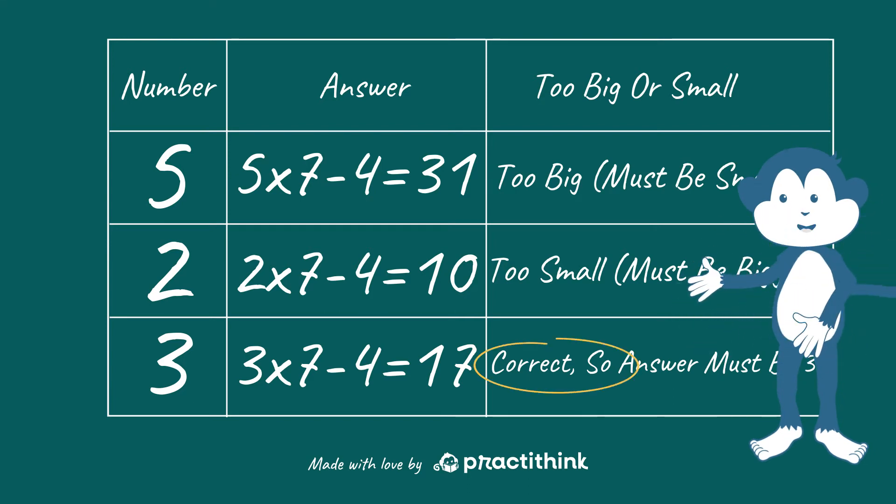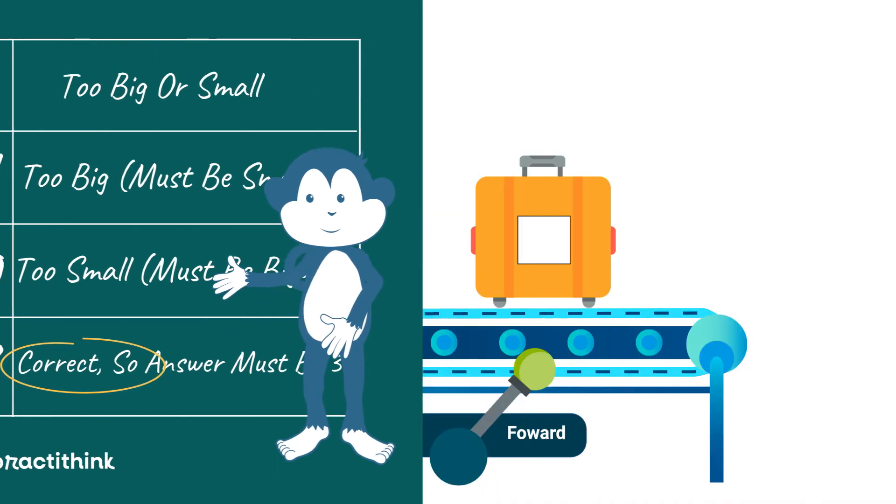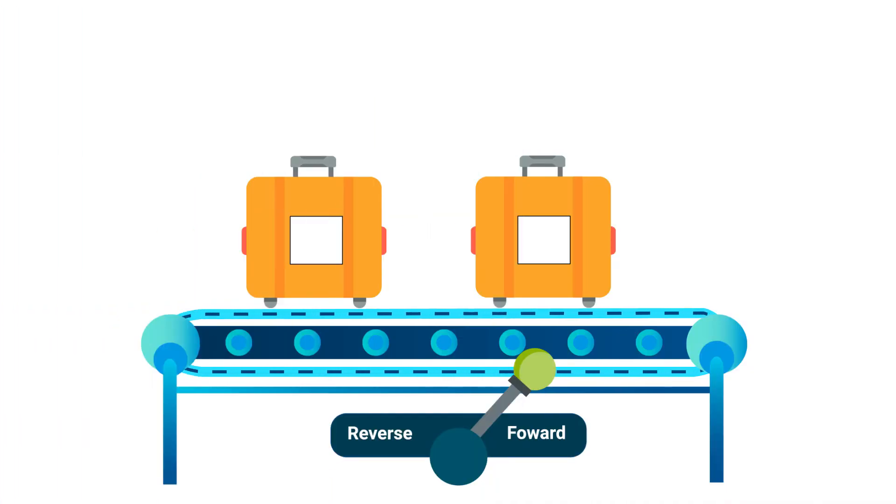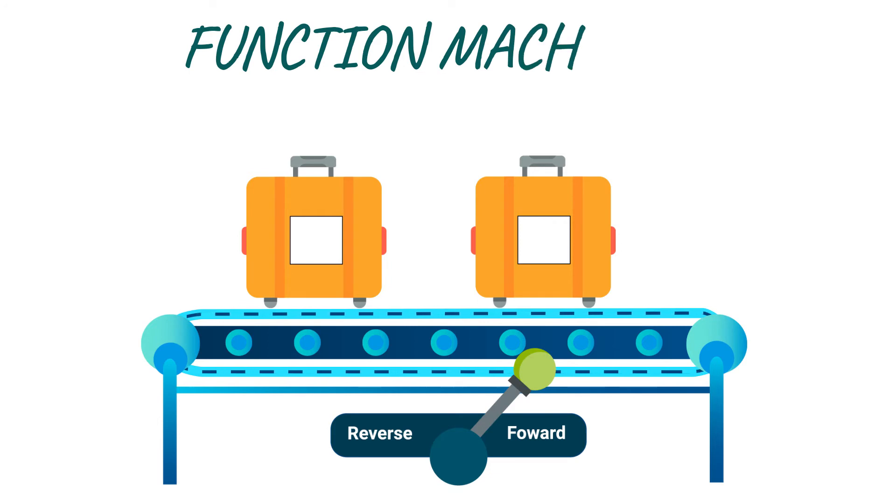Okay, that's one way to solve linear equations. Now let's look at another. This one is called function machines. You may have seen this before.